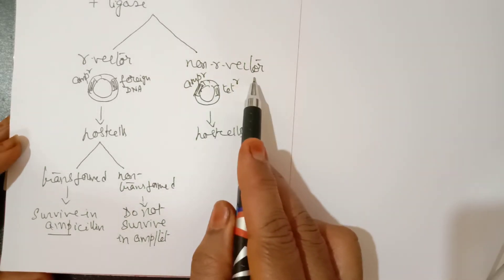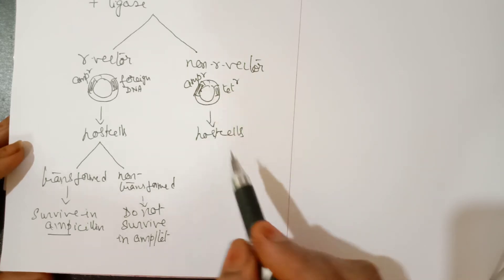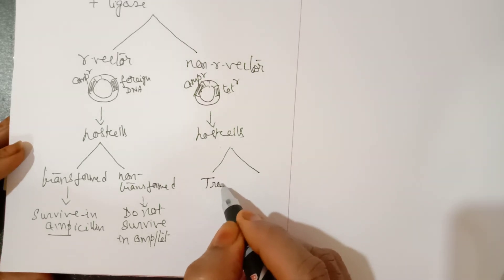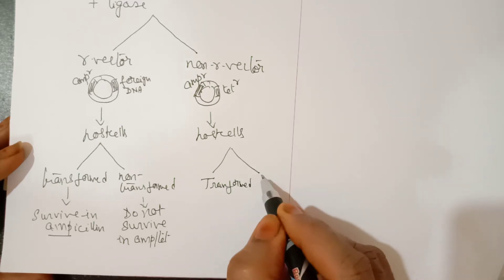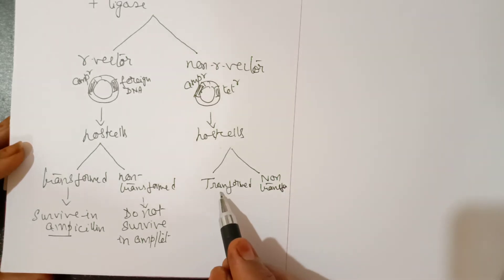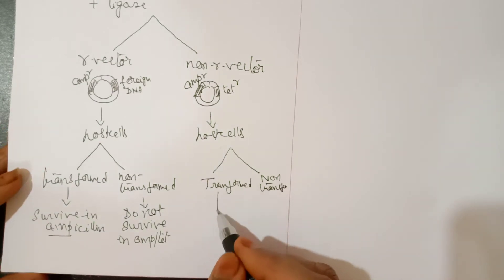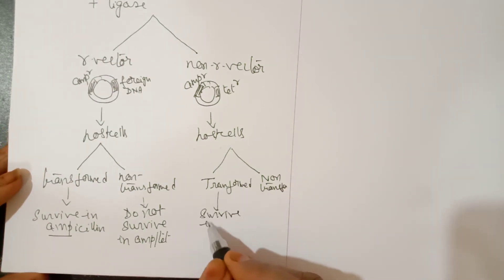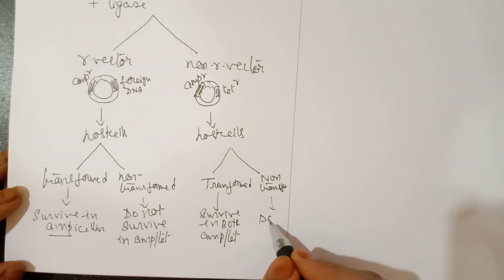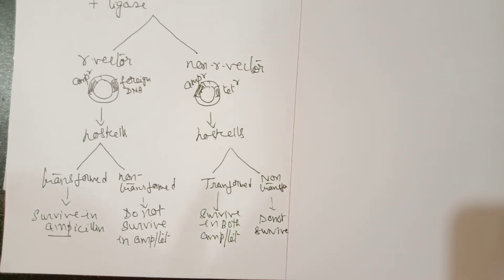Similarly, if a non-recombinant vector is mixed with host cells, there is again a chance of obtaining transformed or non-transformed host cells. If transformed with a non-recombinant vector, the cells have both the ampicillin and tetracycline resistant genes, so they can survive in both ampicillin and tetracycline medium. Non-transformed cells, as before, will not survive in either medium, because E. coli cells do not have any resistant genes of their own.